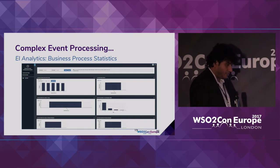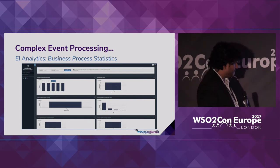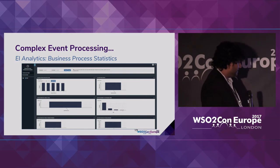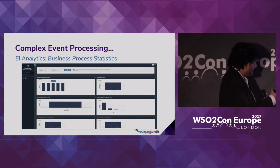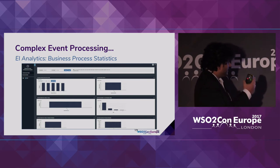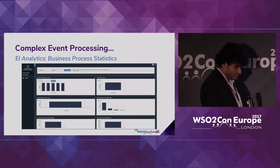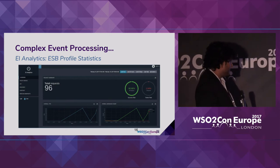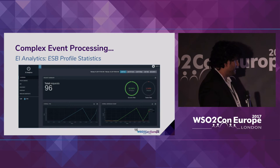In EI we have a few out-of-the-box analytics built in using our real-time analytics. One is the business process statistics — these give you statistics on how the business process instances are working, the average execution times, how many times they have had human interactions, and so on. All these stats can be calculated and visualized in a dashboard. In the same way, we also have for the ESB profile stats like the requests, the failed events, what anomalies are happening, and so on.